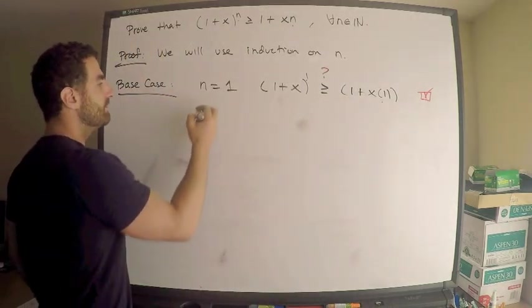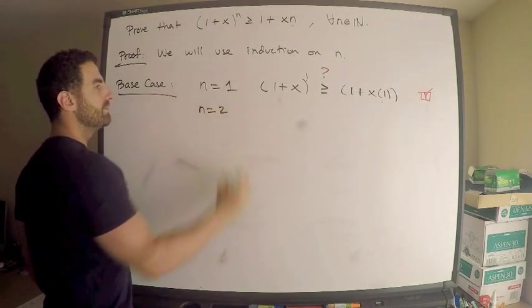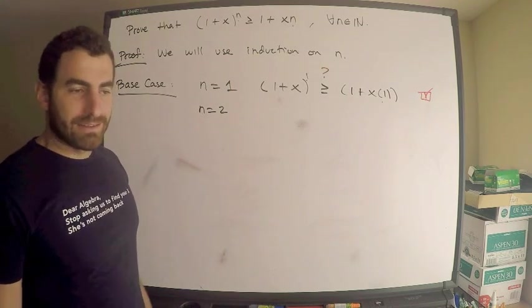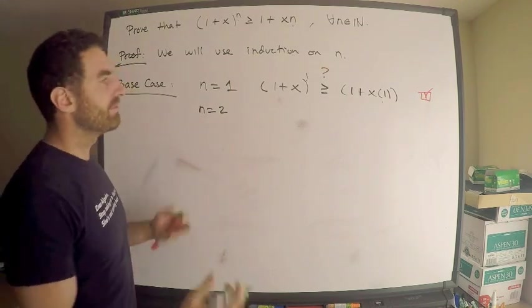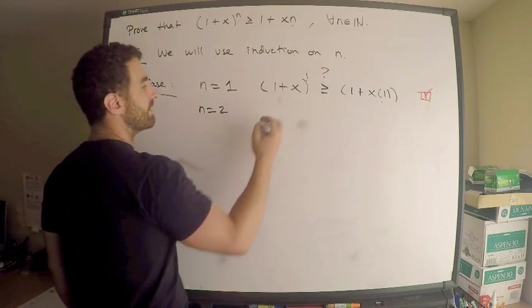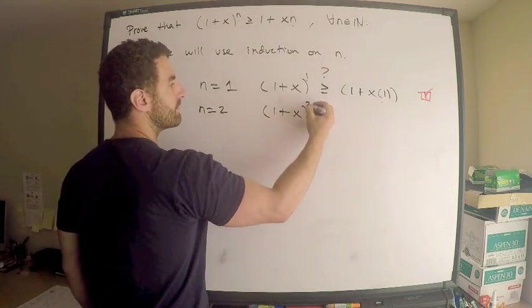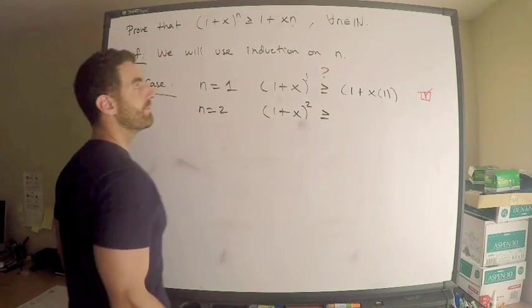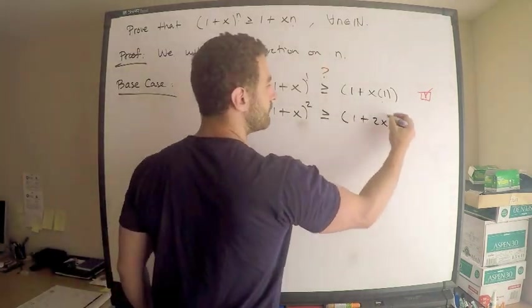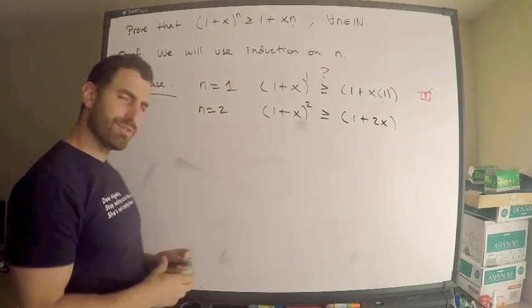Now, what about n is 2? So what if n equals 2? All right, we'll replace n with 2, and maybe do some sort of manipulation to convince yourself. But I think it's pretty apparent as well. 1 plus x squared, is that greater than or equal to 1 plus 2x? Is this true?